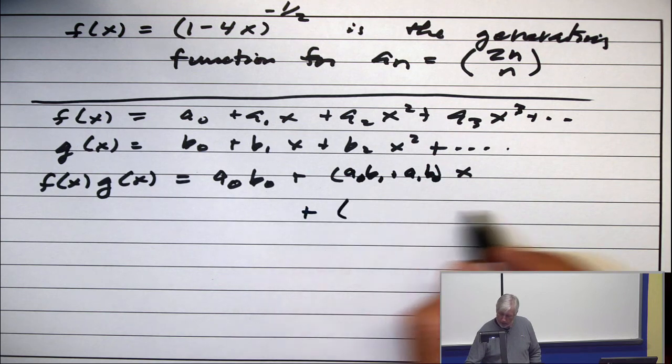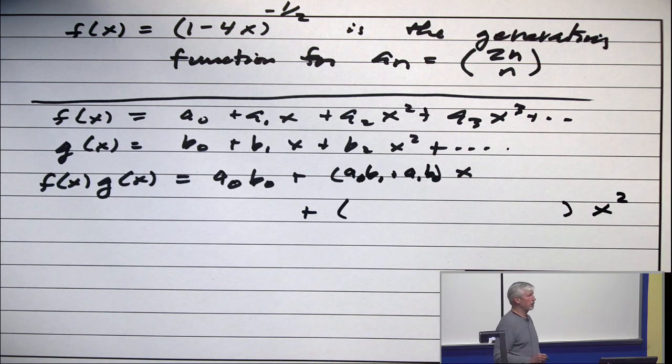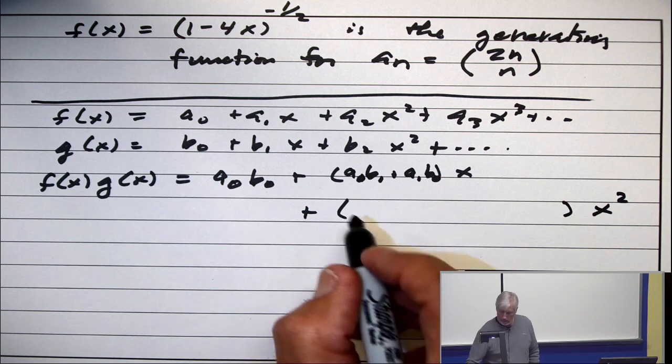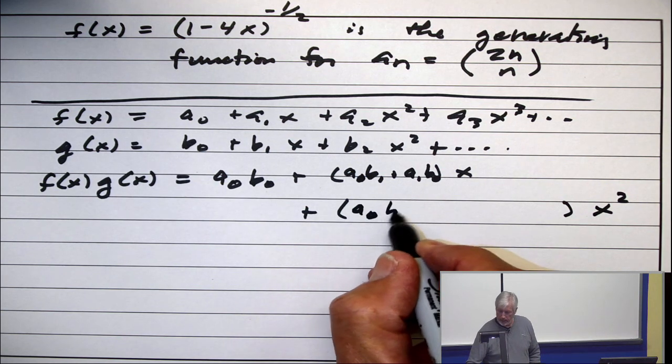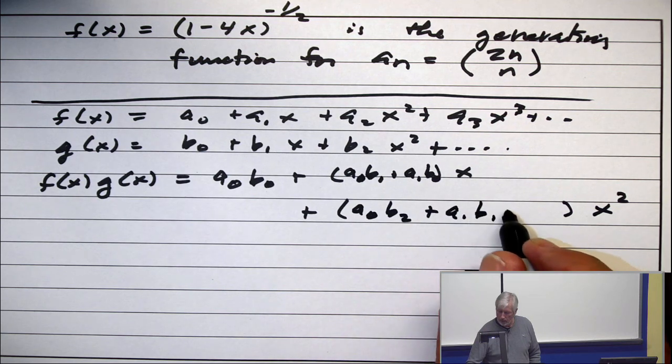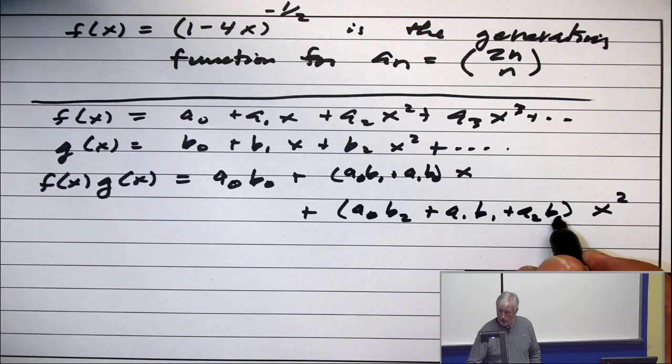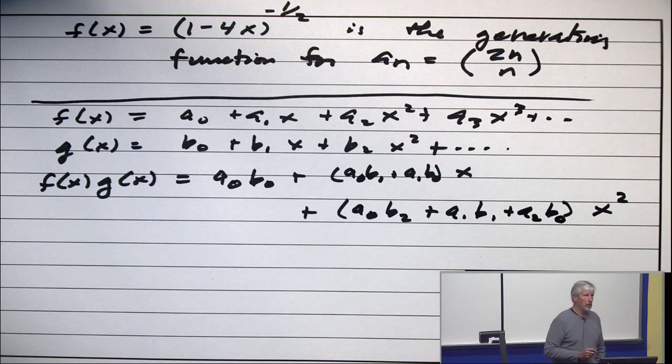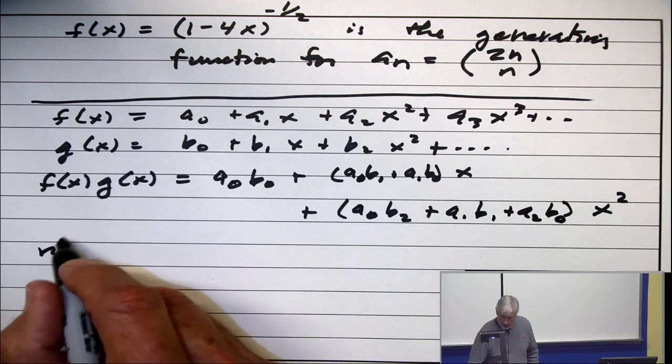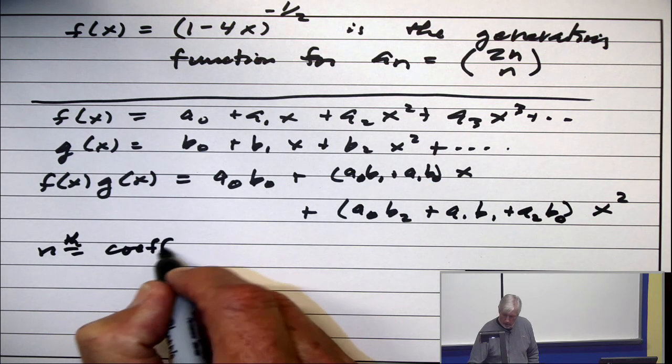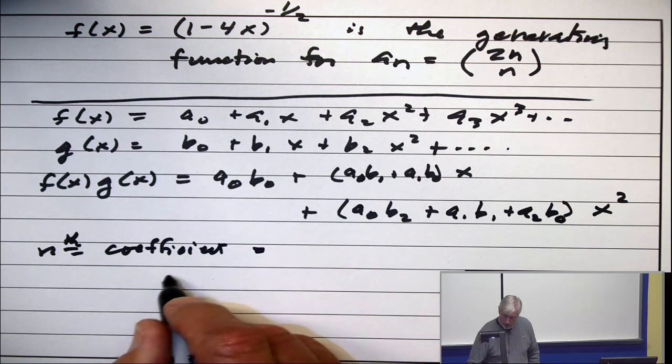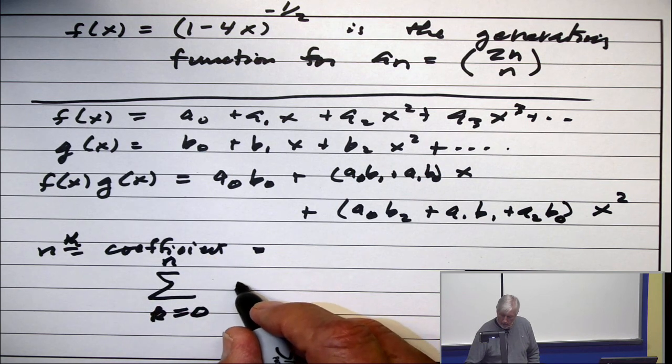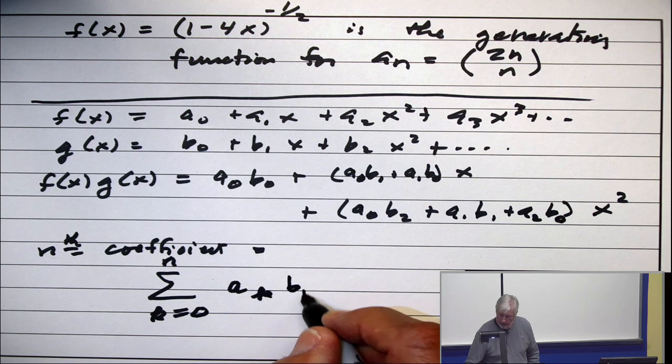All right, what's the coefficient of x squared? A0, b2 plus a1, b1 plus a2, b0, etc. So the nth coefficient in the product is the sum k equals 0 to n of a sub k, b sub n minus k.